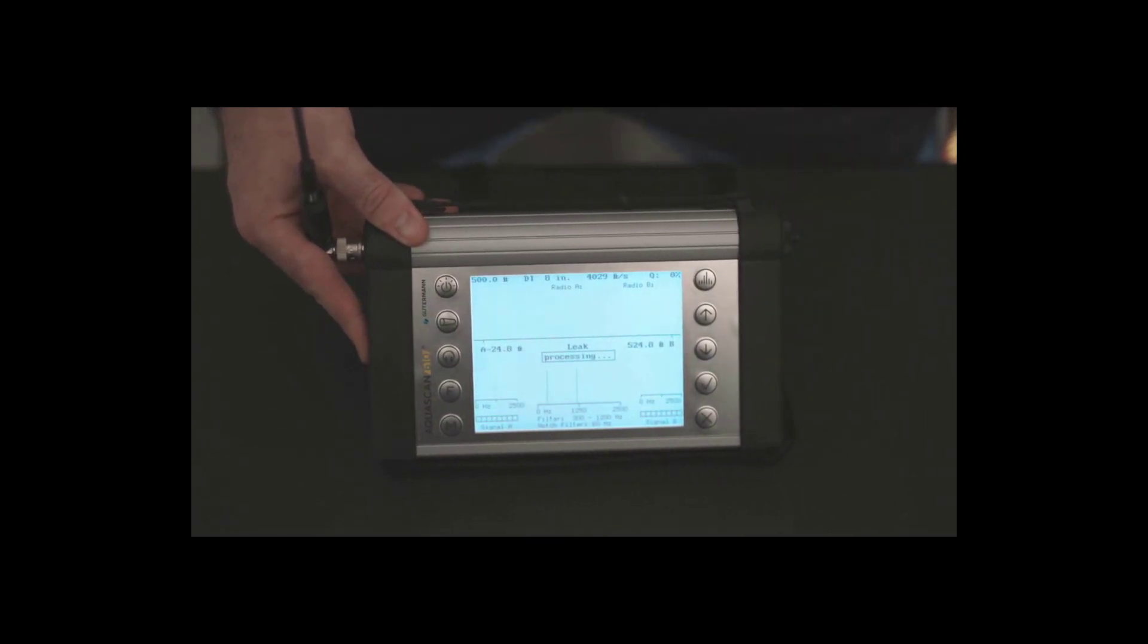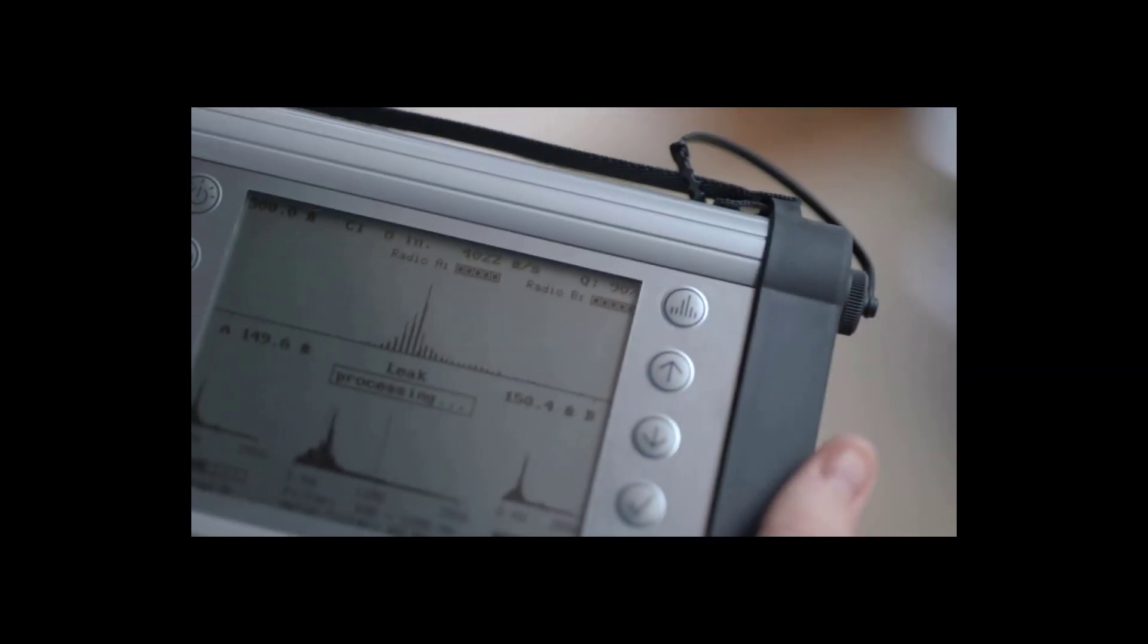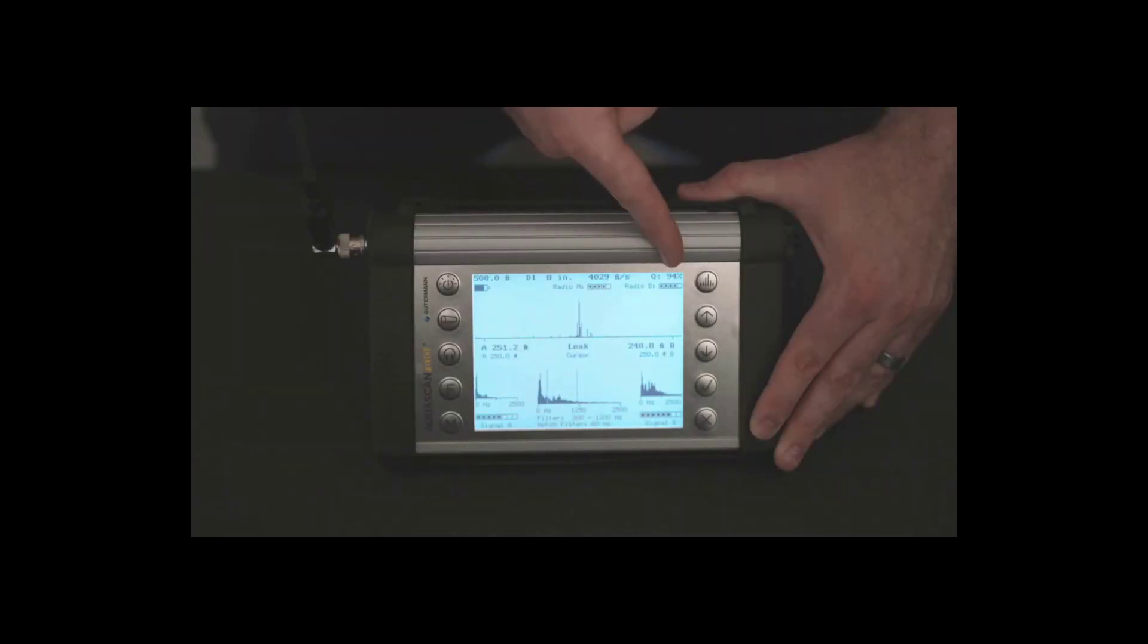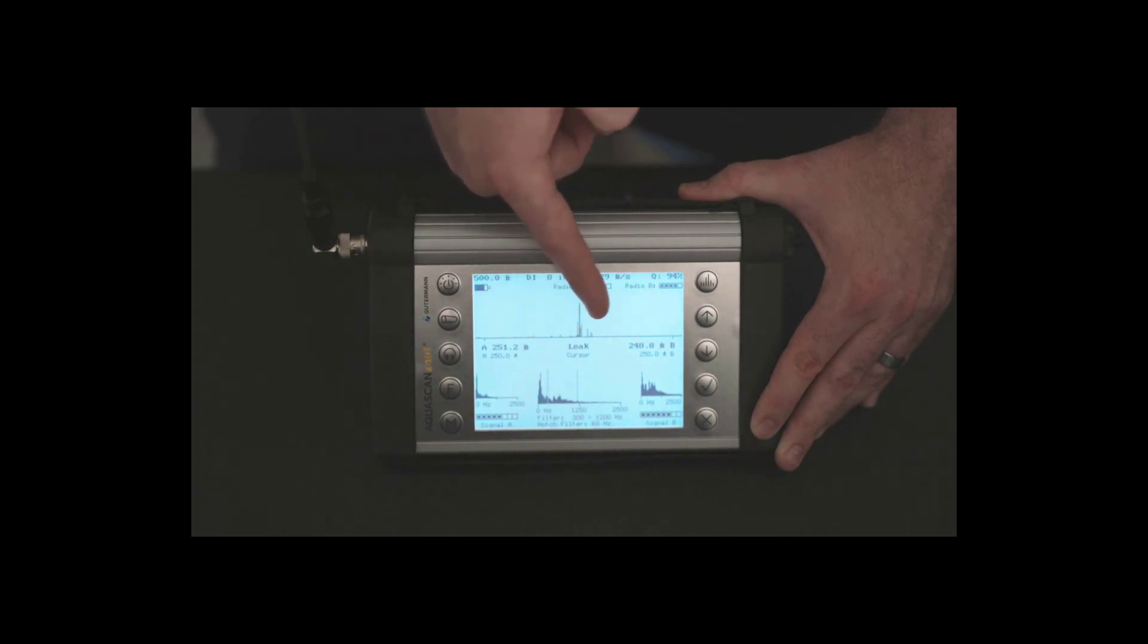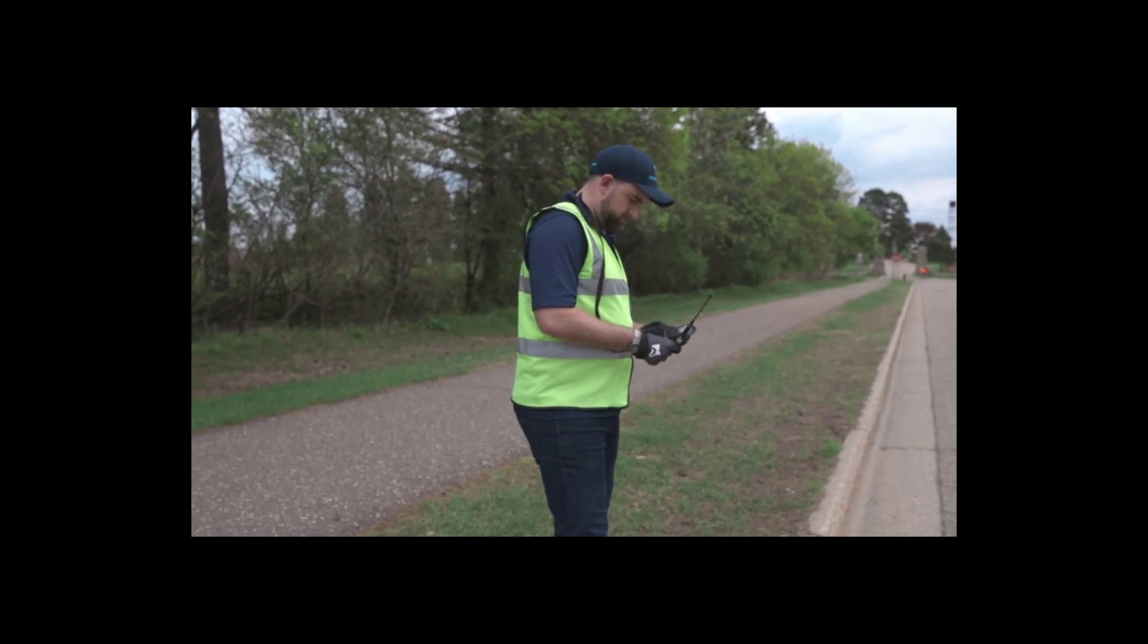The AquaScan 610's display gives you numerous points of data that allow the user to determine if they have identified and pinpointed a leak. The first is the quality percentage number found in the upper right corner of the screen. This is a percentage from 0 to 100. The higher the percentage number, the more confident the user can be in knowing that they have identified and pinpointed a leak. Although there is no set number that represents the presence of a leak or not, the operator must use judgment in order to make the final decision to mark the leak.